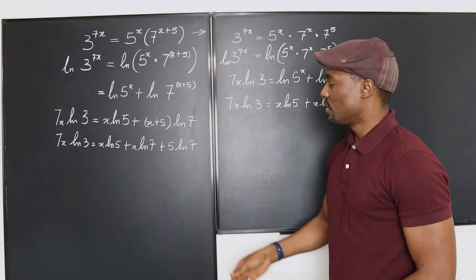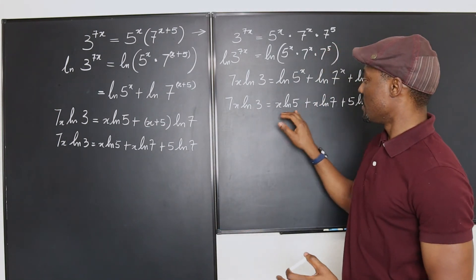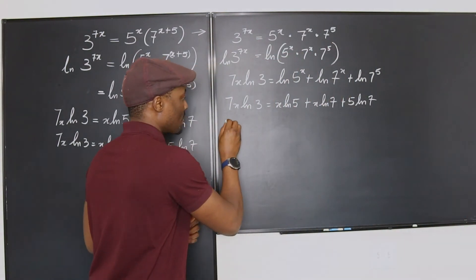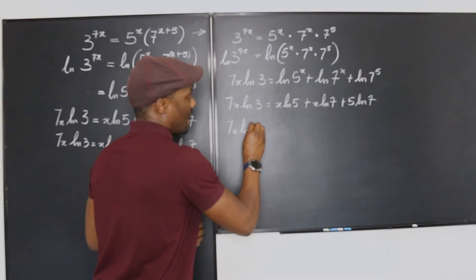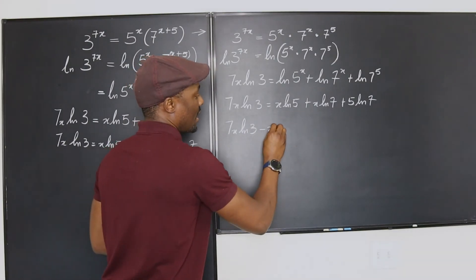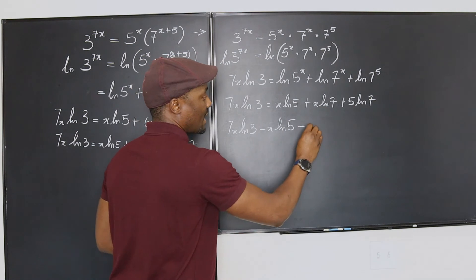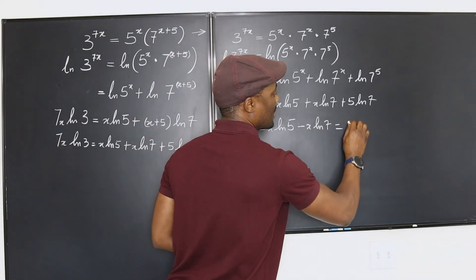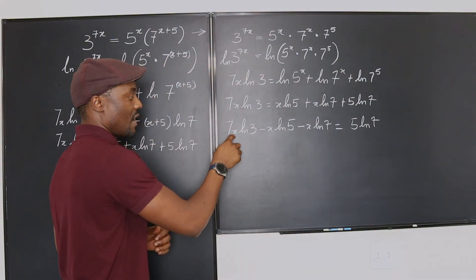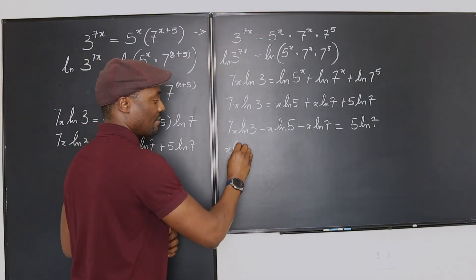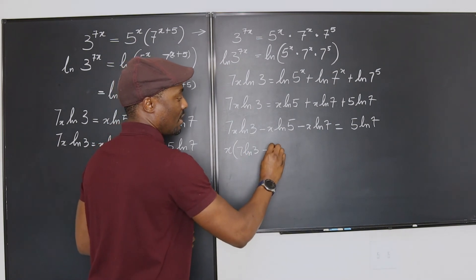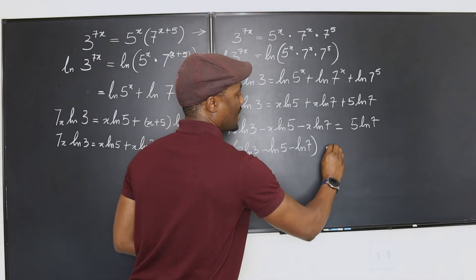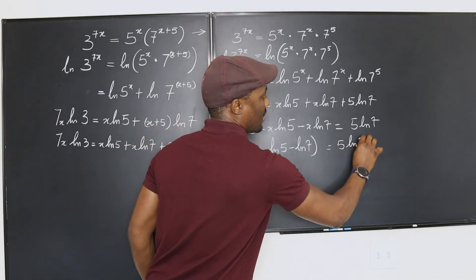So, at this point, we just need to collect the like terms or the terms that contain x and solve it. So, I'm just going to continue here. So, at this point, this is going to be 7x ln 3 minus x ln 5 minus x ln 7 will be equal to 5 ln 7. So, I take out the x, I factor it out. We're going to have 7 ln 3 minus ln 5 minus ln 7 and that will be 5 ln 7.